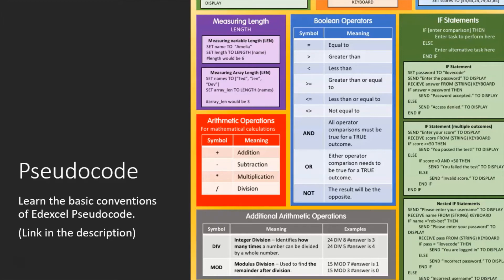All GCSE computer science courses have pseudocode, and they each have their own version — Edexcel has its own. I've linked below a PNG file of Edexcel's pseudocode. Pseudocode is halfway between a programming language and English statements. You need to learn how to write it, and I'll do more videos on this. Have a look at the conventions — for example, printing something to the screen, or setting a variable: 'set password to I love code'. We don't write 'print enter password' or 'output enter password' — we write 'send enter the password to display'. Have a look at the file linked below and learn these statements.